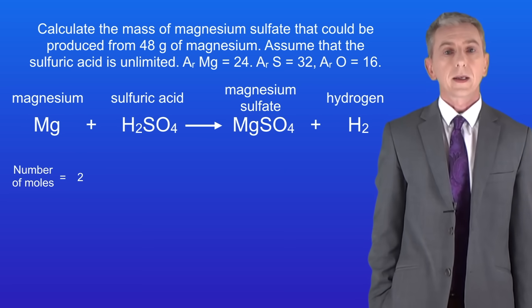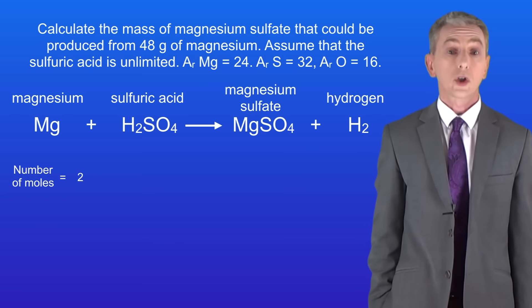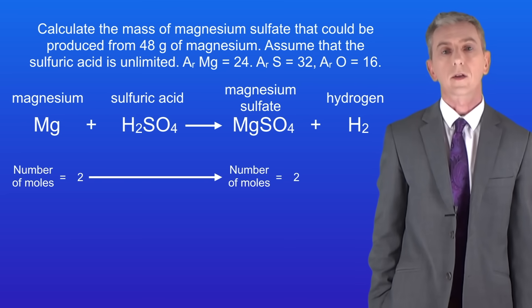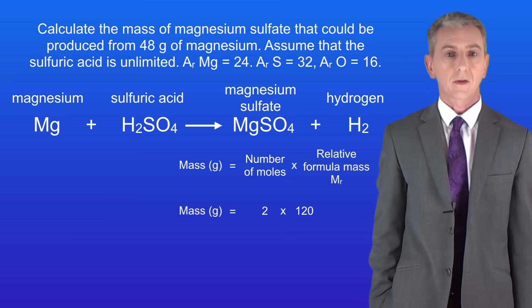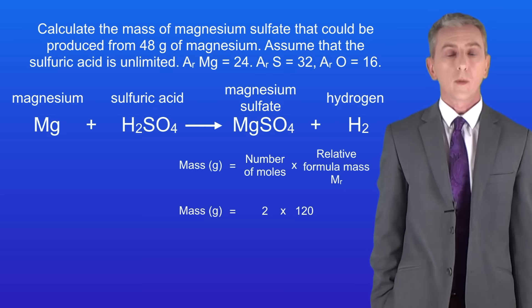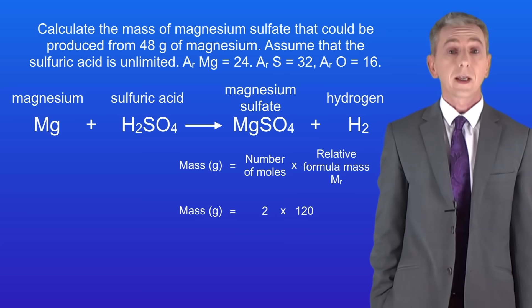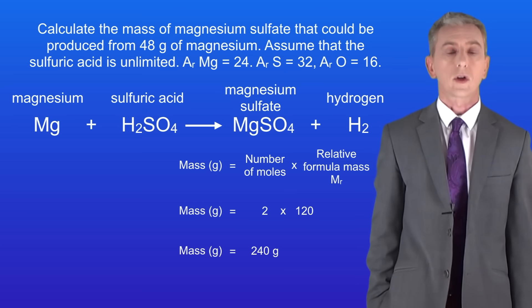We know that one mole of magnesium could produce one mole of magnesium sulfate. We've got two moles of magnesium so we could produce two moles of magnesium sulfate. To calculate the mass of that we multiply the number of moles, which is two, by the relative formula mass of magnesium sulfate which is 120. This gives us a final mass of 240 grams.